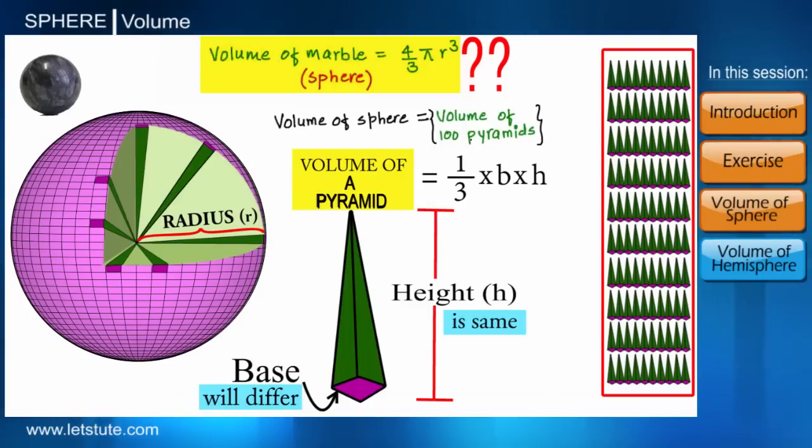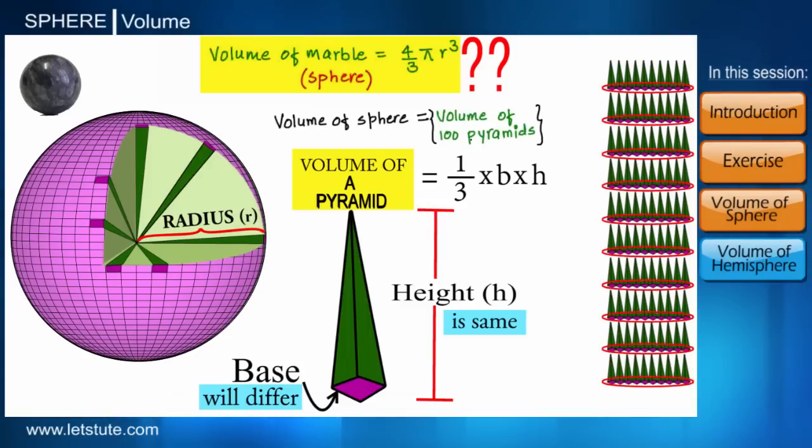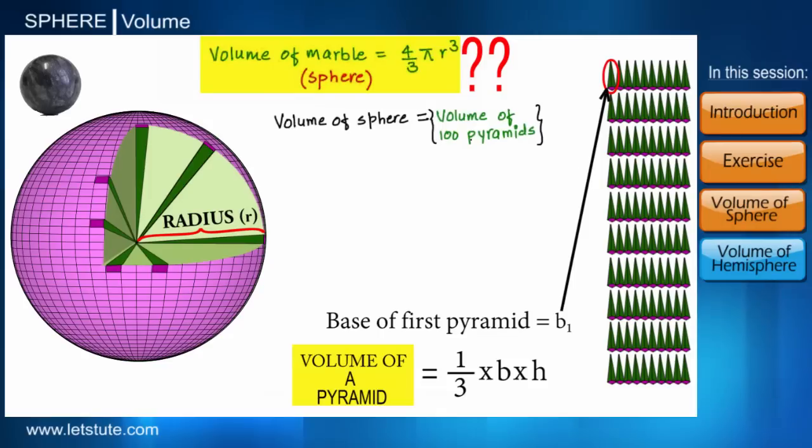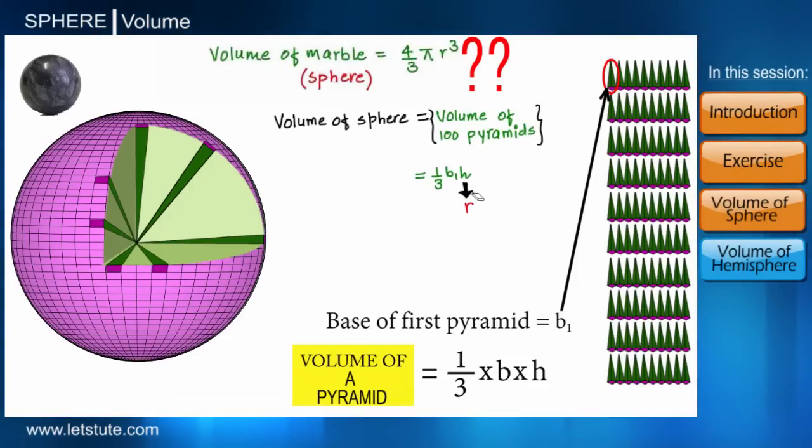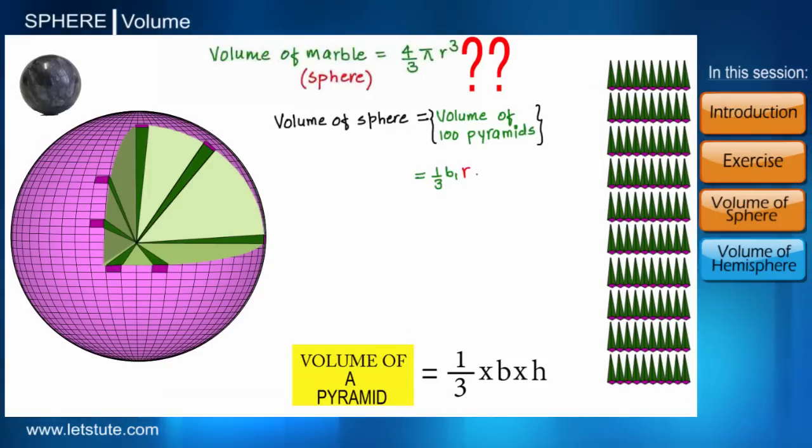So let's consider the first pyramid have base b₁, so it can be written as 1/3 into b₁ into h, where h is the height of the pyramid. Now this height can be replaced by the radius of the sphere, since height of the pyramid and radius of the sphere are equal and are constant. Similarly for the second pyramid we can write 1/3 b₂r, for third 1/3 b₃r, and so on.